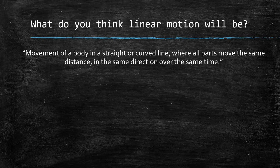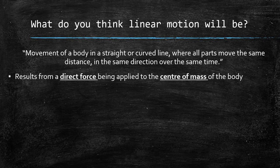The key here is it's not just movement in a straight line — it's movement where all parts move the same distance in the same direction. So it can still be in a curved line, which is strange because when you think of linear, you think it's just straight movement only. It results from a direct force being applied to the centre of mass of the body.